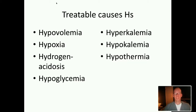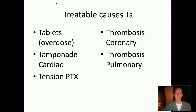The H's: hypovolemia, hypoxemia, hydrogen ion (acidosis), hypoglycemia, hyperkalemia, hypokalemia, hypothermia, and you can also add hypocalcemia. The T's: tablets — which broadly means overdoses including patient's own medications, prescribed and illicit, hospital-administered medications, and running infusions. Also tamponade (cardiac tamponade), tension pneumothorax, thrombosis — both coronary thrombosis and pulmonary embolus. Those are the T's.